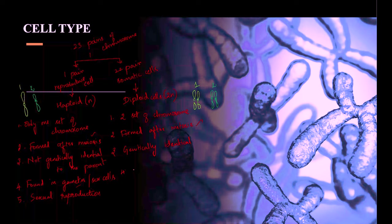Diploid cells are found in somatic cells and play a very important role in the growth and also development of living organisms. Diploid cells are also called homologous — 'homo' meaning same — so these pairs of chromosomes are identical.